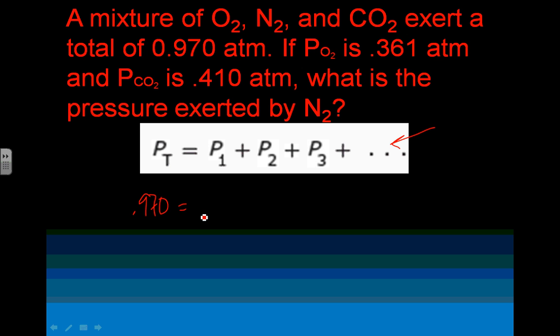Since all the units are the same, I'm not going to write those down. Pressure of oxygen is 0.361. Pressure of carbon dioxide is 0.410. And I'm looking for the pressure of nitrogen gas. The sum of all of these will be the total pressure. Well, this is going to be 0.970 equals 0.771 plus x. I'm going to do the opposite of what's being done to x here. I'm going to subtract by 0.771 on both sides. And x equals 0.199. So this is the pressure of nitrogen gas in the sample of mixtures here.